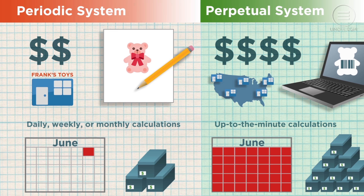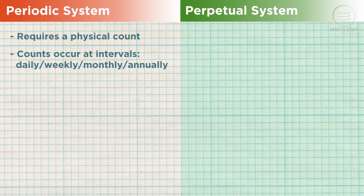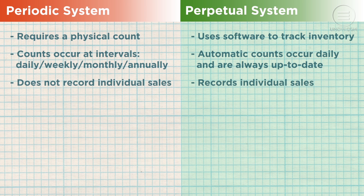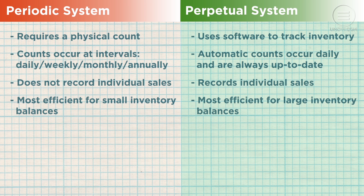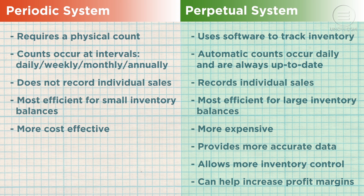Let's review the pros and cons of both systems. A periodic inventory system requires a physical count at daily, weekly, monthly, quarterly, or annual intervals. A perpetual system uses software to automatically count and track inventory debits and accounts payable credits on a daily basis, and subtracts sales from on-hand inventory recording them in the general ledger immediately. A periodic system is most efficient for businesses with small inventory balances, while a perpetual system is most efficient for large inventory balances. A perpetual system is more expensive but provides more accurate data, allows for more inventory control, and can help businesses increase their profit margins.